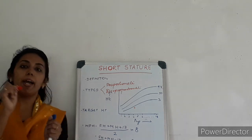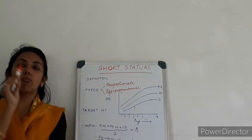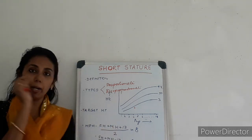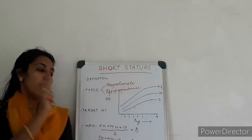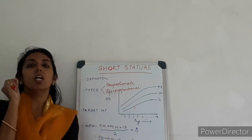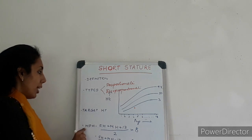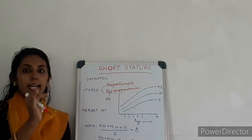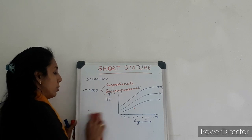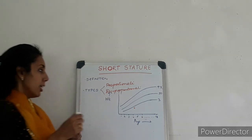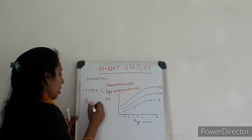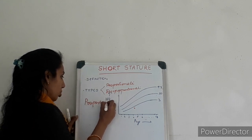Now, what is mid-parental height? Mid-parental height is father's height plus mother's height plus 13 divided by 2 for boys, and father's height plus mother's height minus 13 divided by 2 for girls. The target height based on mid-parental height is plotted at 18 years.